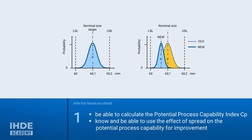Hello again to this lesson, which essentially has two learning objectives. At the end of this lesson you should be able to calculate the machine and process potential yourself, and you should also understand the effect of spread on the machine potential so that you can use this knowledge as a starting point for improvement.